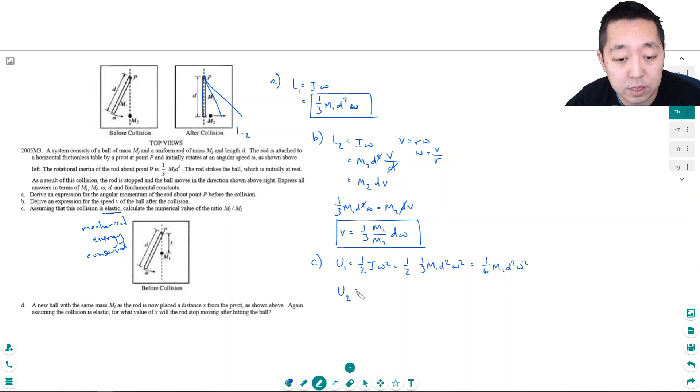It's 1 half i omega squared for this thing rotating. And that's 1 half i which is 1 third m1 d squared times omega squared. And that's 1 half times 1 third is 1 sixth m1 d squared omega squared. The energy after, you can think of it as rotational energy. But it's really just kinetic energy of this afterwards. Because this thing stopped moving so there's no rotational energy here. But what's remaining is this energy is 1 half m2 v squared.